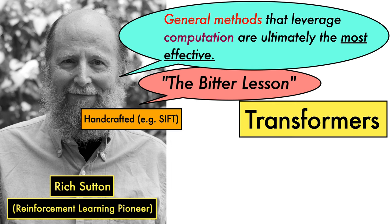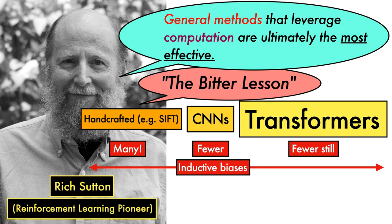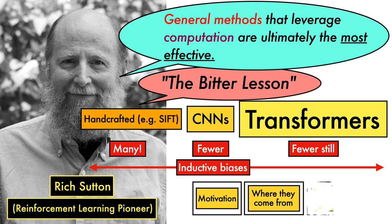If we consider handcrafted features such as SIFT and CNNs, we can place each of these approaches on a scale in terms of how much we have deliberately built inductive biases into the model. Handcrafted features make heavy use of human knowledge and hard-coded inductive biases. CNNs shift much of the burden away from humans onto automatically learned features, but still enforce some inductive biases with properties like translation invariance. Transformers remove even more of the inductive biases built into the model — you can think of them as being the most data-driven architecture. In this video, we'll look at the motivation behind designing new architectures, where transformers come from, and how they work.